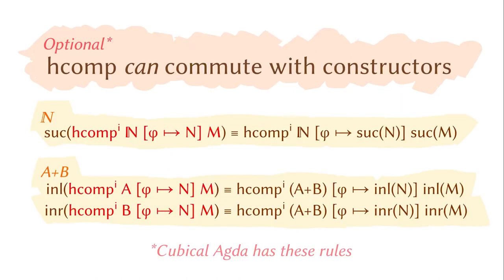There is one more thing I want to bring up about inductively defined types. You can also make the hcomp commute with the constructors. That is, you can push a constructor inside the hcomp so that it applies to each component of the box. For example, you can push the successor constructor inside a composition in the natural number type, or the inleft and inright constructors inside a composition in the disjoint sum type. These rules are optional, but cubical Agda has these rules.